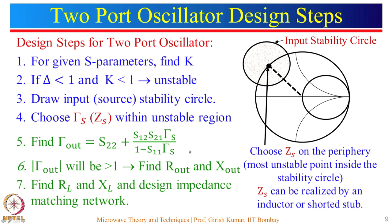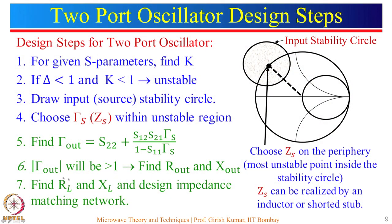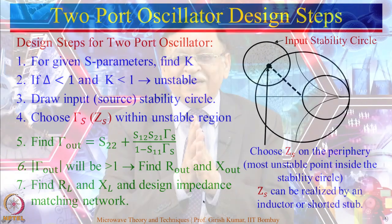Gamma_out is given by the standard expression you saw during amplifier design, where S_22, S_11, S_12, S_21 are all known S-parameters and gamma_s has now been chosen. Compute gamma_out and verify that its magnitude is greater than 1 — if not, there is a calculation error, because it will always be greater than 1 if the initial steps were done properly. Once gamma_out is confirmed greater than 1, find the values of R_out and X_out, then choose R_L and X_L as in the single-port case, and finally design the impedance matching network to complete the oscillator design.